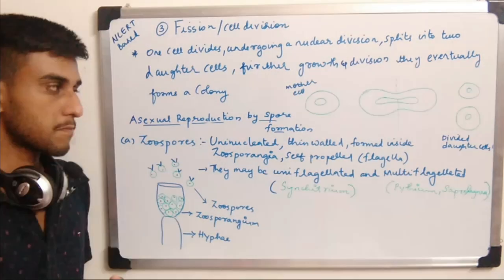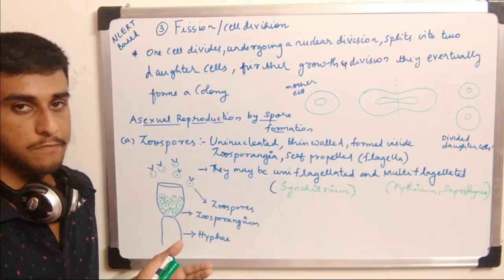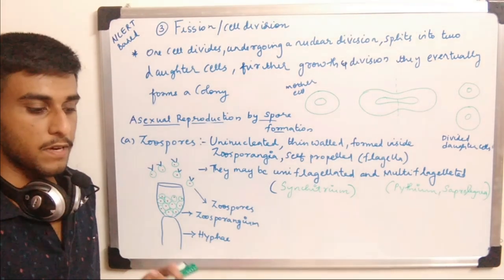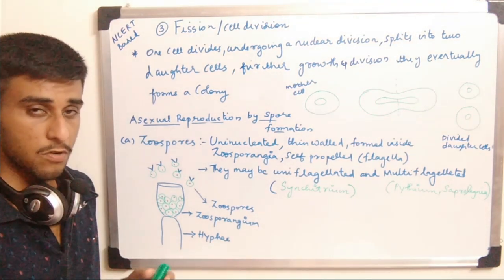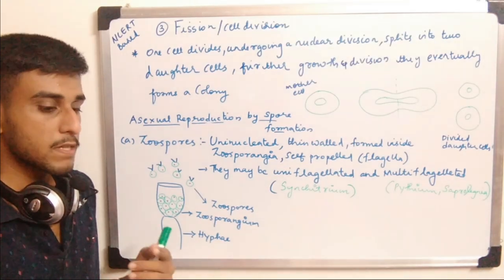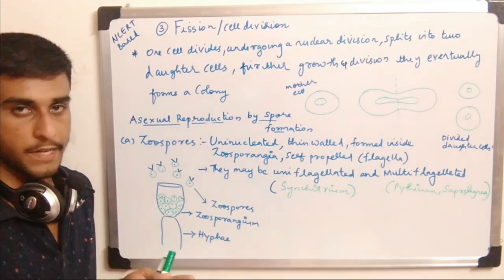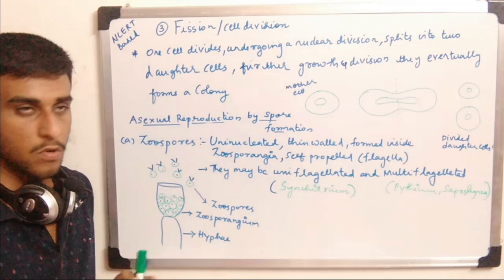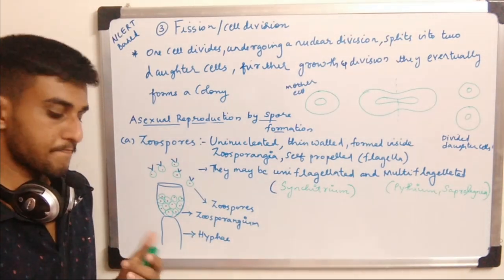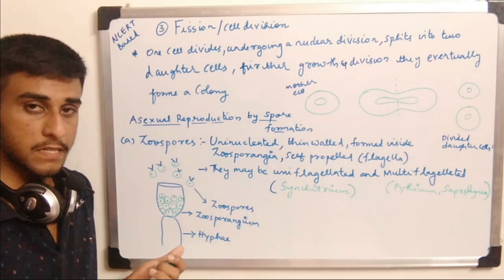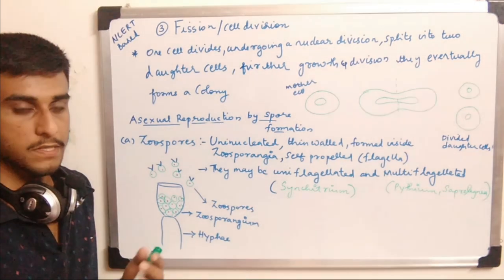If a cell divides many times, the daughter cells further divide and form a colony — like granddaughter cells. This is the end of vegetative reproduction. There are also other vegetative reproduction methods not planned for this lecture.